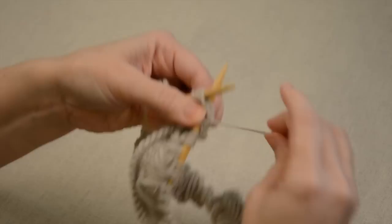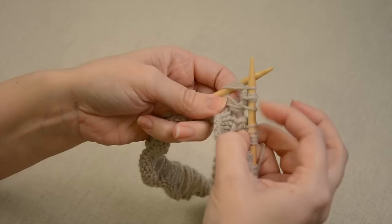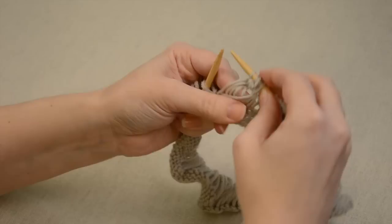Now that we have five loops, or five stitches, on our right-hand needle going through these five loops, we can remove all of the stitches.